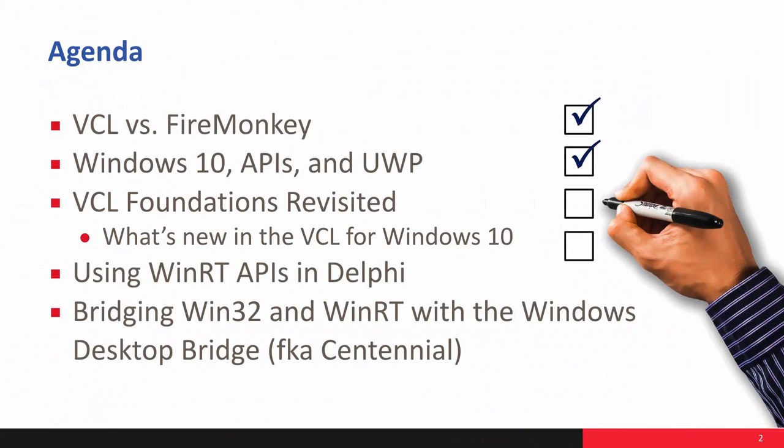For our agenda today, we're going to start out talking about the difference between FireMonkey and VCL, because every time I talk about VCL, I always get a question about FireMonkey. Then we're going to look at Windows 10 APIs, what is the UWP, VCL foundations, what's new in the VCL for Windows 10, using Windows RT APIs in Delphi, and finally bridging the Windows API and the WinRT API with the new Windows Desktop Bridge.